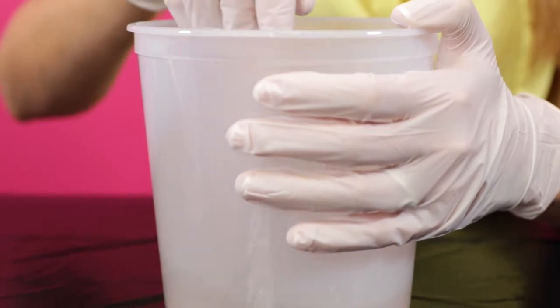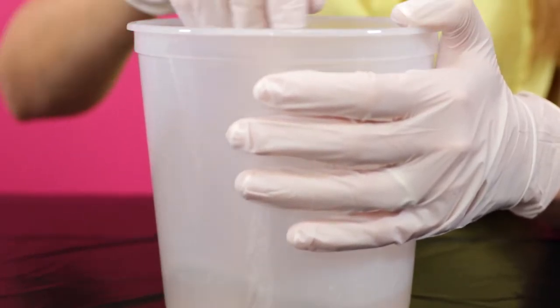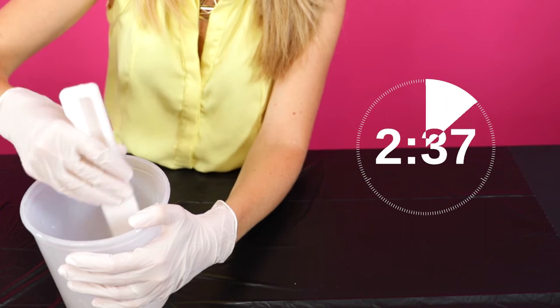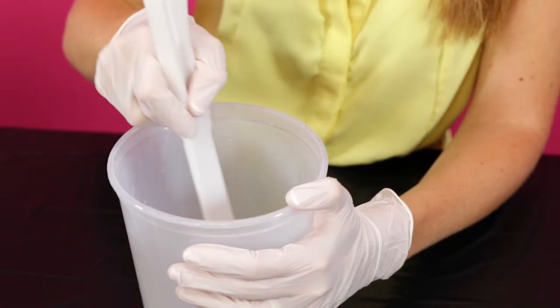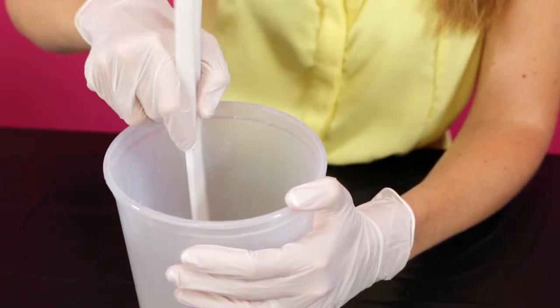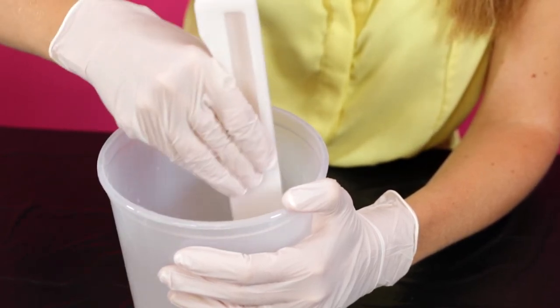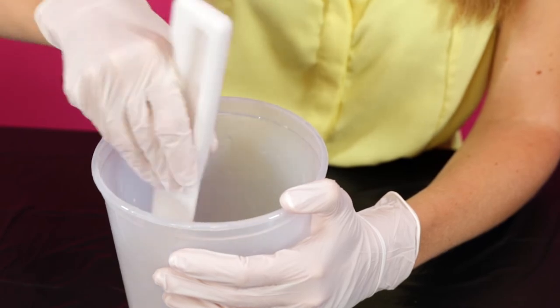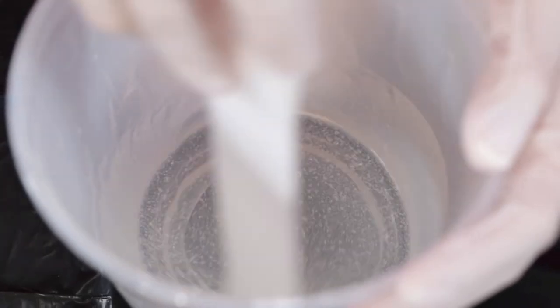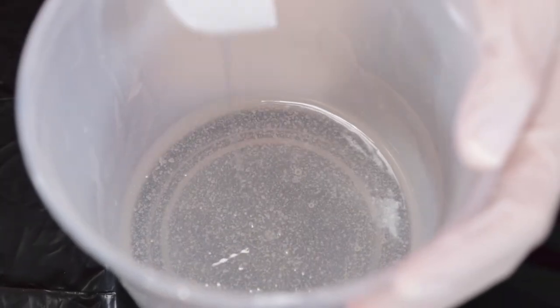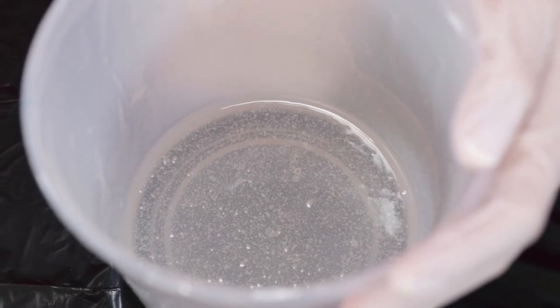Stir your resin and hardener mixture thoroughly for at least three full minutes. You'll want to scrape along the sides and bottom of the container as you stir to ensure that the entire mixture will catalyze properly and therefore cure as expected. If you see bubbles forming during this step, don't worry, we'll take care of them in step five.